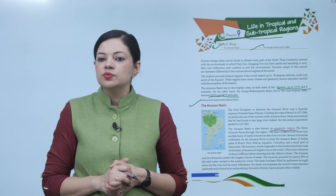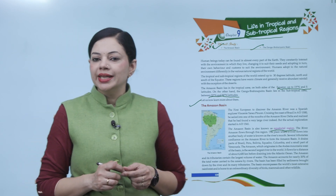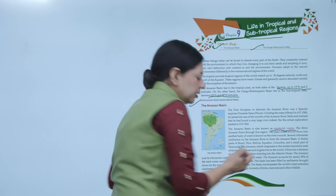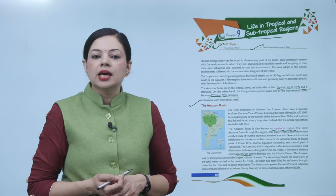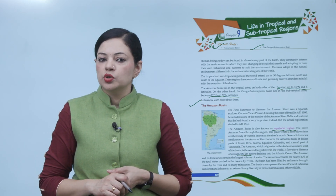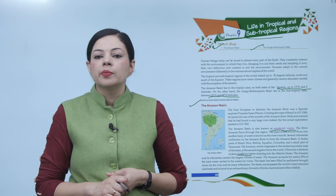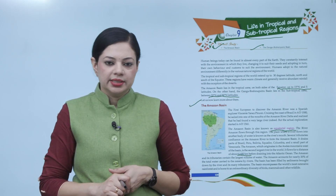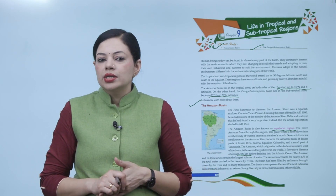The Amazon, which originates in the Andes mountains west of the basin, is the second largest river in the world. It flows for a distance of about 6400 km before draining into the Atlantic Ocean. The Amazon and its tributaries contain the largest volume of water, and the Amazon accounts for nearly 20% of the total water carried to the oceans by rivers. The basin has been filled by sediments brought down by the river and its many tributaries. The basin encompasses the world's most extensive rainforest and is home to an extraordinary diversity of birds, mammals and other wildlife.